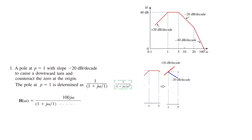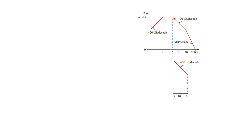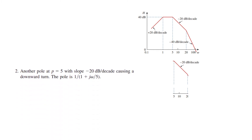Next, the line goes down at −20 dB/decade again, which represents another pole at p=5. The equation for this pole is 1 divided by (1 + jω/5). So our transfer function gains another denominator term: (1 + jω/5).